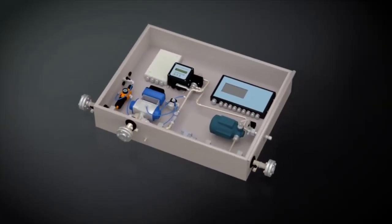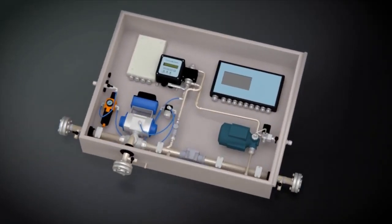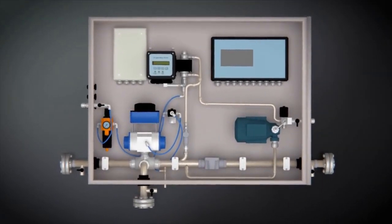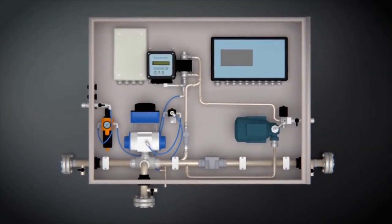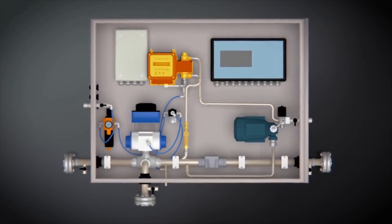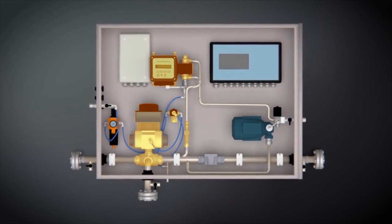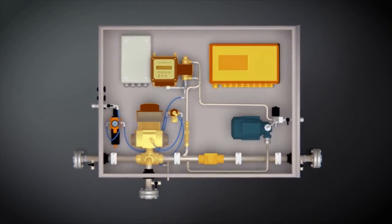The white box system can be placed between any type of bilge water separator and the overboard discharge. It consists of a pressure control valve, a PPM monitor, a flow control device, an electro-pneumatic three-way valve, a flow meter, and a recorder.